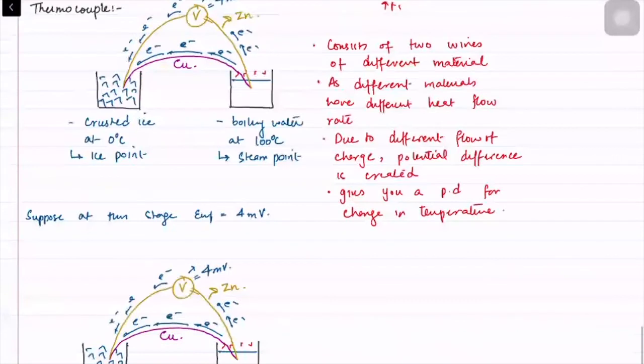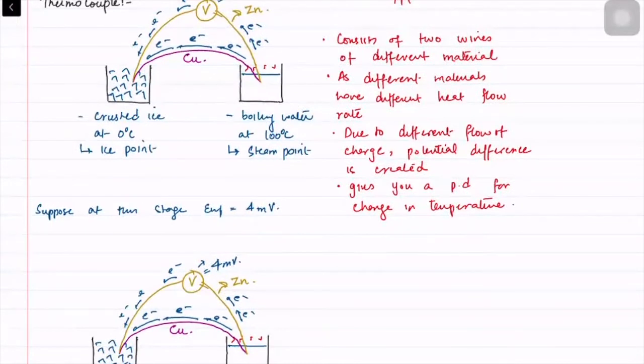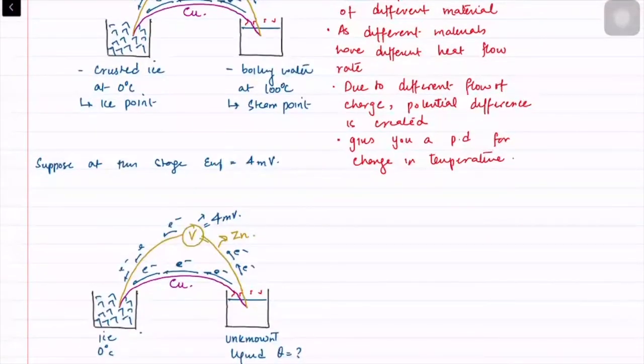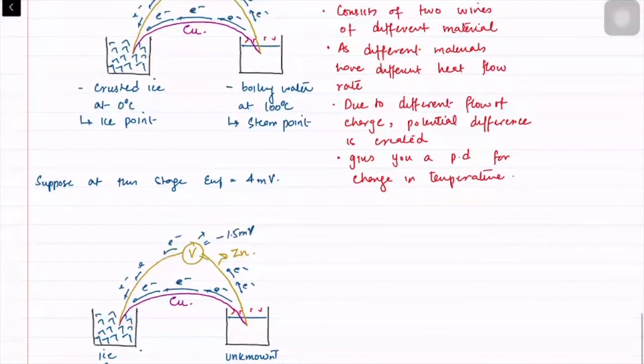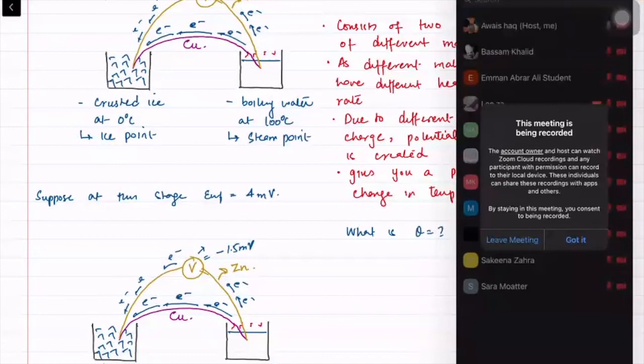This is still ice at zero degrees, and this is some unknown temperature liquid called theta. Now it started showing us a value of minus 1.5 millivolts. So the question is: what is theta?